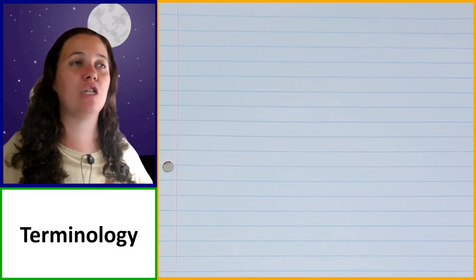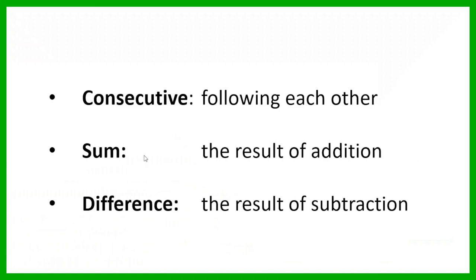First, we're going to look at some terminology you should know. We've got three terms. The first is 'consecutive,' which means following each other. For example, 3, 4, 5 are consecutive numbers; 3, 5, 7 are consecutive odd numbers; and 2, 4, 6 are consecutive even numbers. Then we've got 'sum,' which is the result of addition, and 'difference,' which is the result of subtraction. We also have 'product' and 'quotient,' but we're not really going to be using them at the moment.